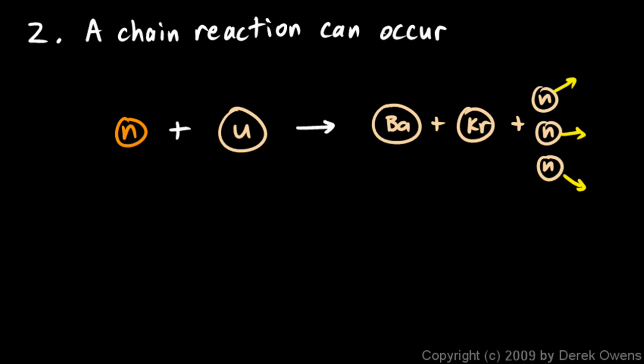Now remember, it was the neutron hitting the uranium that caused the fission in the first place. And as a result of this, three more neutrons are now flying around. If this is happening inside a lump of uranium, these three neutrons can hit other uranium atoms and cause them to split.